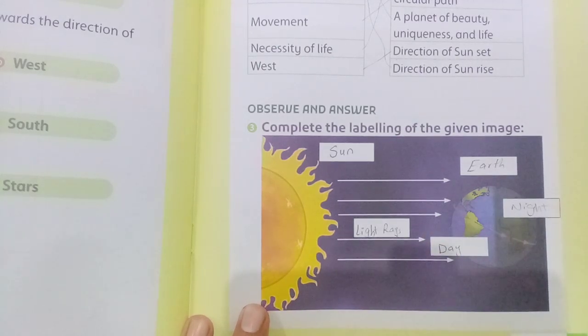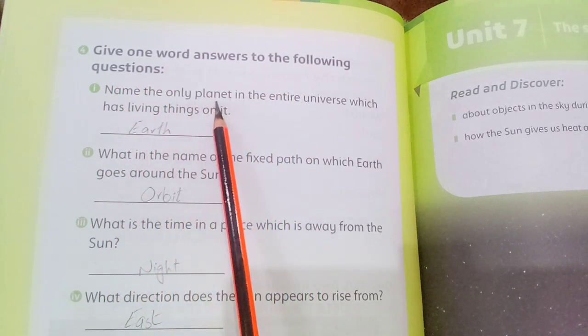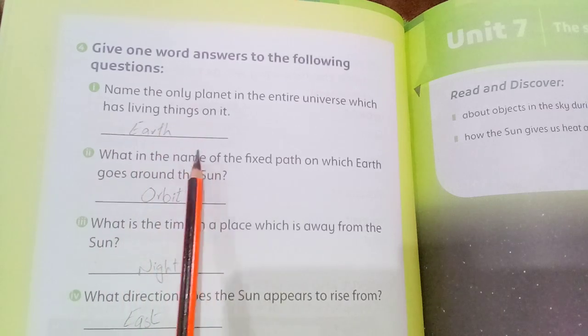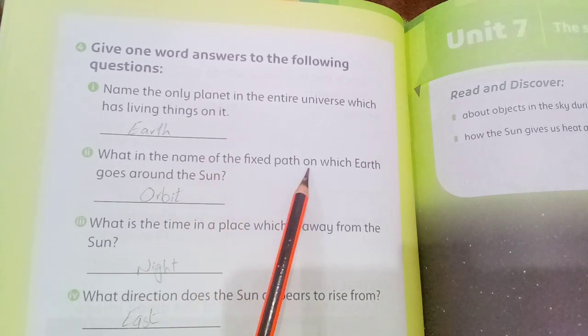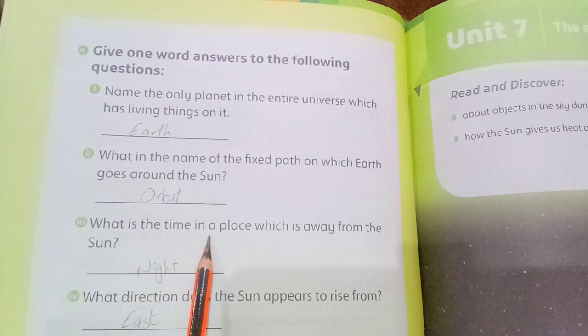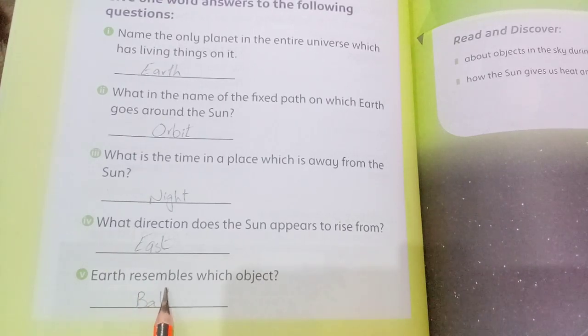Give one word answers to the following questions. Name the only planet in the entire universe which has living things on it — earth. The name of the fixed path on which earth goes round the sun — orbit. What is the time in a place which is away from the sun — night. What direction does the sun appear to rise from — east. Earth resembles which object — ball.